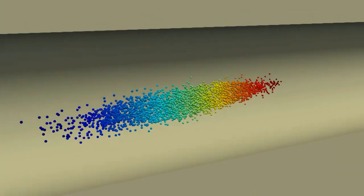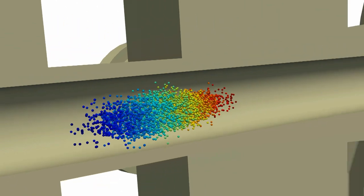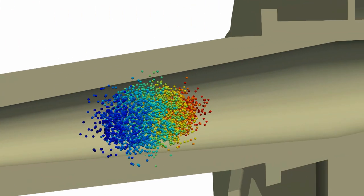After a number of refocalizations and defocalizations, the beam is sent to uniformly irradiate a target.